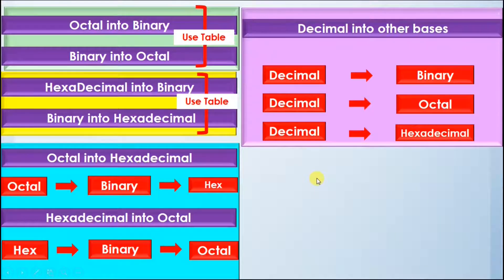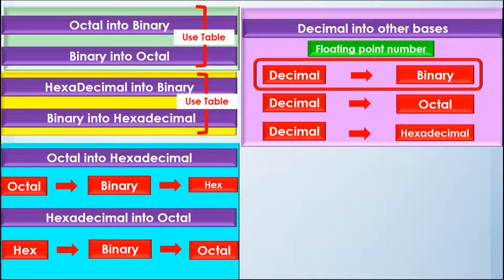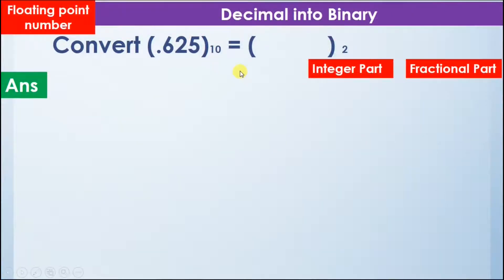Now we will see how to convert decimal into other bases using floating point numbers. We will see how to convert decimal into binary. As previously mentioned, the procedure for conversion of decimal into binary using whole numbers is totally different from the procedure for floating point numbers, so we will use a different procedure in this example.